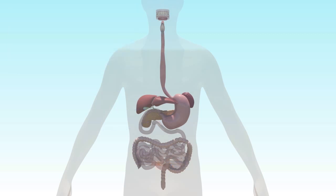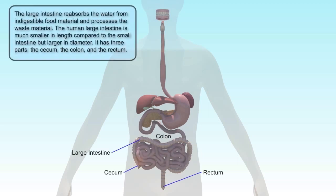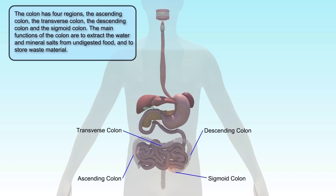The large intestine reabsorbs the water from indigestible food material and processes the waste material. The human large intestine is much smaller in length compared to the small intestine but larger in diameter. It is divided into 3 parts: the cecum, the colon, and the rectum. The colon has 4 regions: the ascending colon, the transverse colon, the descending colon, and the sigmoid colon. The main functions of the colon are to extract water and mineral salts from undigested food and to store waste material.